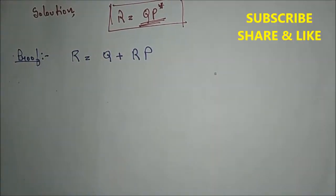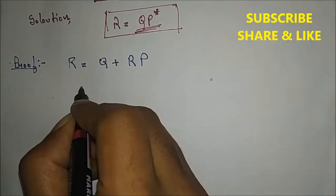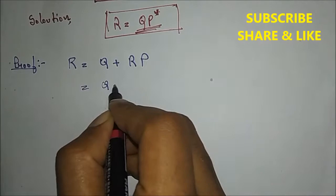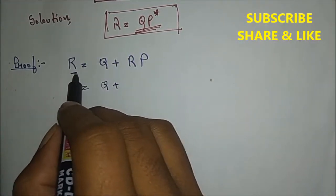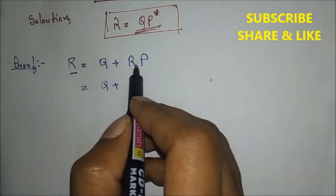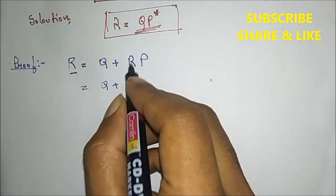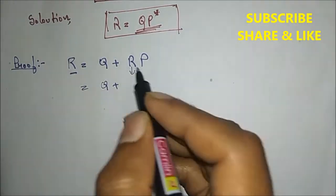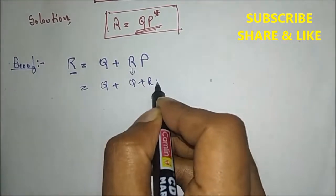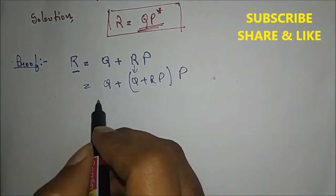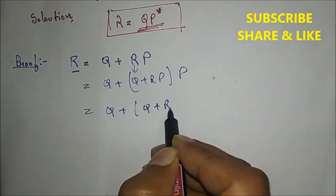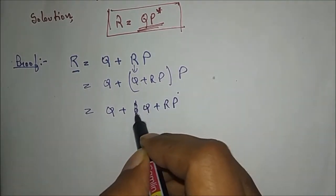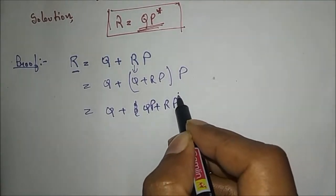Since R equal to Q plus RP is given, what is the value of R? In the right hand side we have R equal to Q plus RP. So in R, I'll put Q plus RP. We get Q plus, substituting R we get Q plus QP plus RP squared.